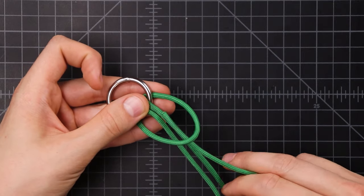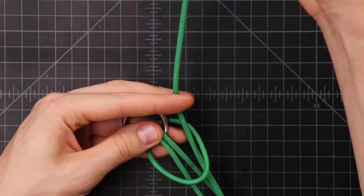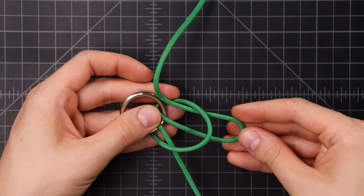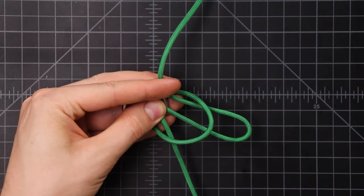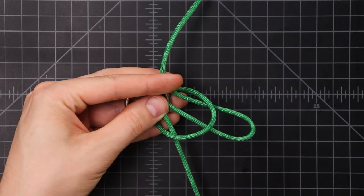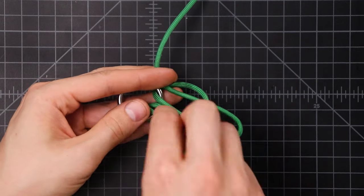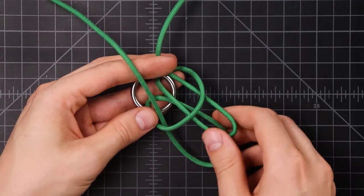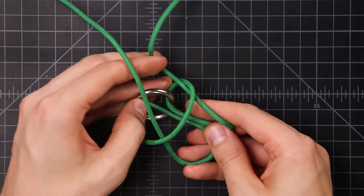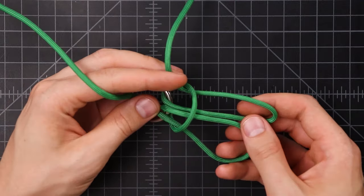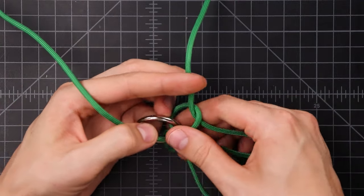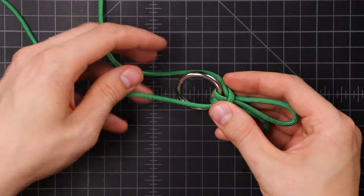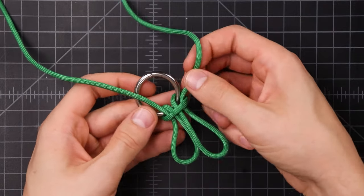Then we'll take our ends and feed them back through, until you have this little bunny ear. Do the same with the other side. You can tighten down the cow hitch portion now. Make our ears a little bit smaller. So we've got that.